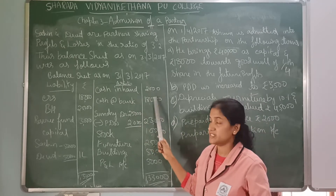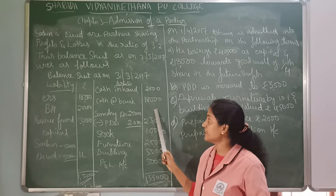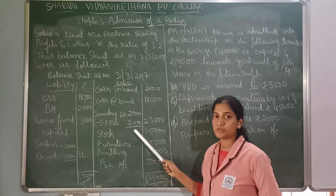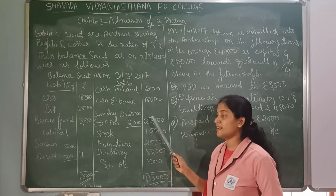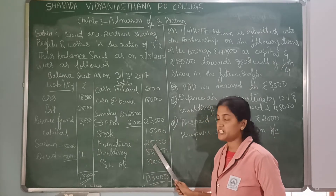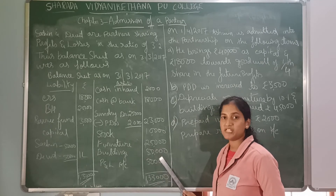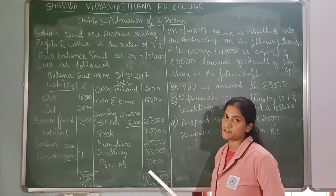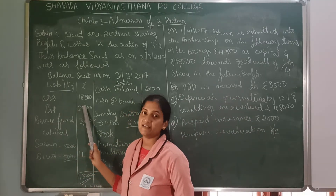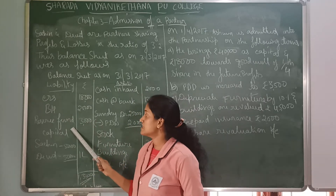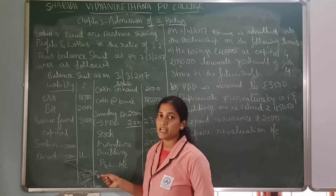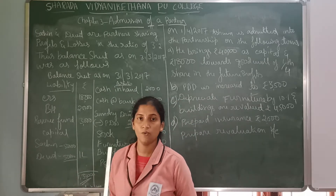On the asset side: Cash in hand Rs. 2,000; Cash in bank Rs. 18,000; Sundry debtors Rs. 25,000 minus provision for doubtful debts Rs. 2,000, giving Rs. 23,000; Stock Rs. 10,000; Furniture Rs. 25,000; Building Rs. 50,000; Profit and loss account Rs. 5,000. On the liability side: Creditors Rs. 18,000; Bills payable Rs. 20,000; Reserve fund Rs. 3,000; Sachin's capital Rs. 50,000 and David's capital Rs. 50,000, totalling Rs. 1,00,000.